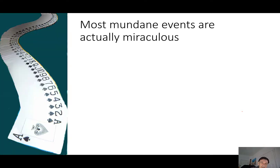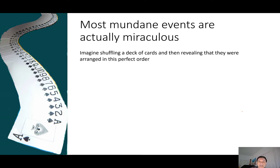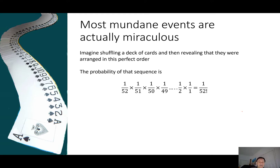As a matter of interest, what we've seen so far leads us to conclude that most mundane events are actually miraculous. If you toss a coin 16 times and record the particular sequence observed, the probability of having got that particular sequence was unbelievably unlikely. Even though you're always going to get some sequence, every sequence is unlikely. Just imagine shuffling a deck of cards and revealing them in perfect order — ace of spades, two of spades, three of spades — all the way through: what we call the perfect card sequence.